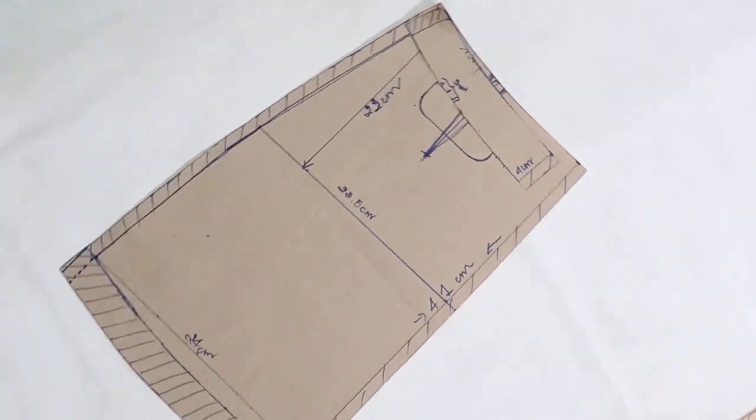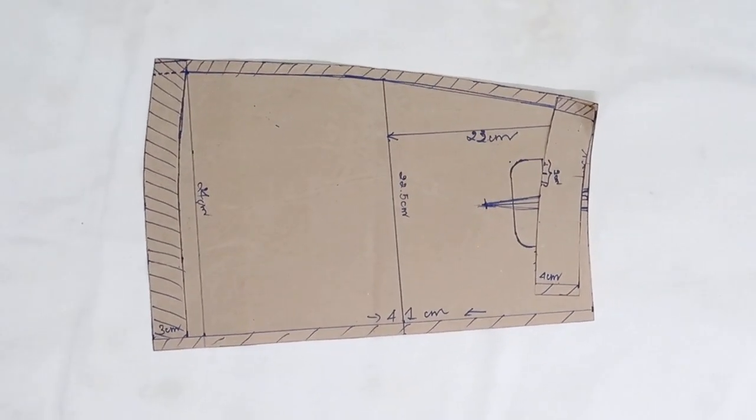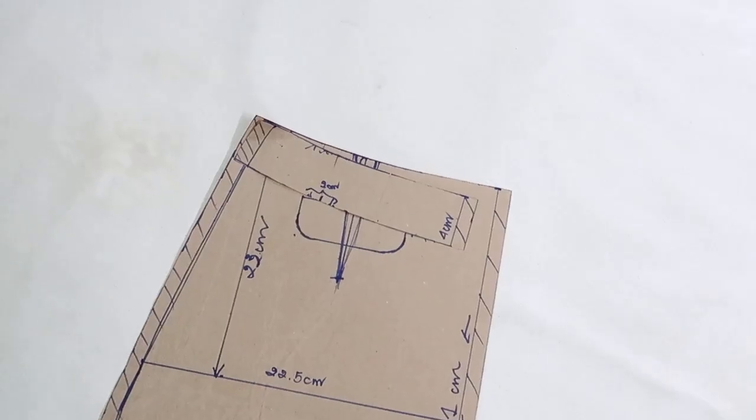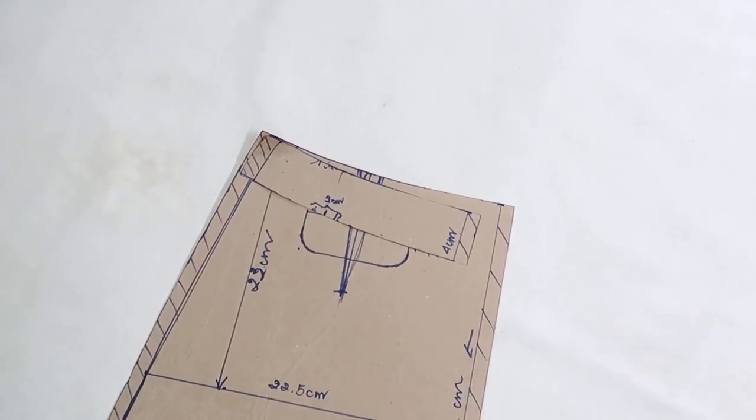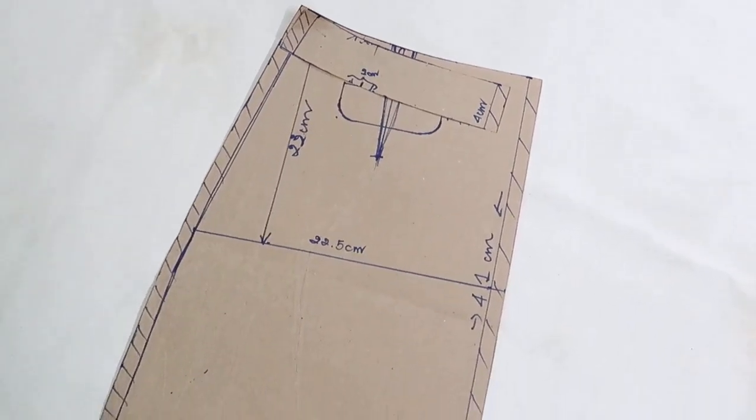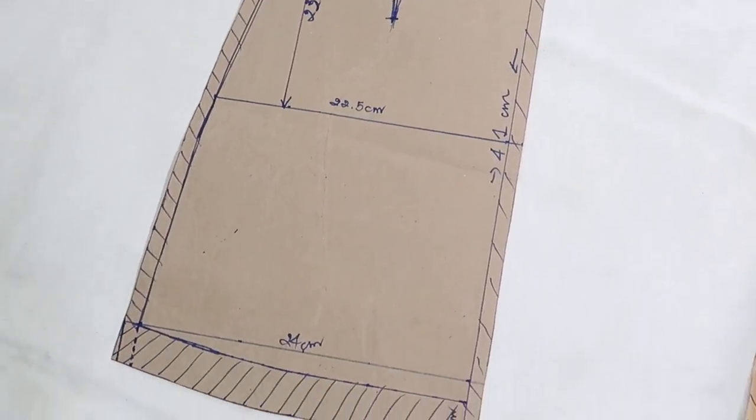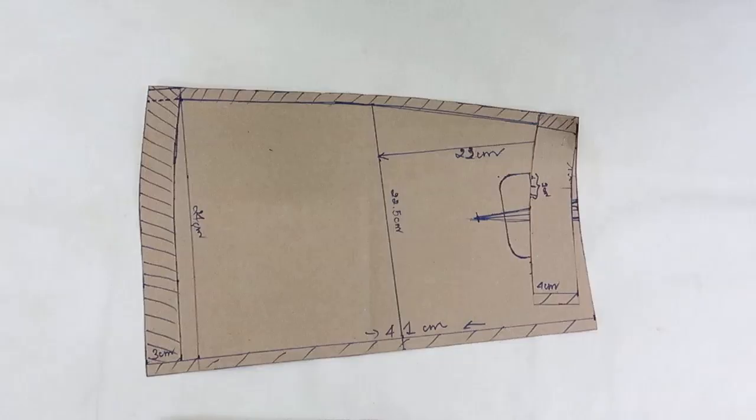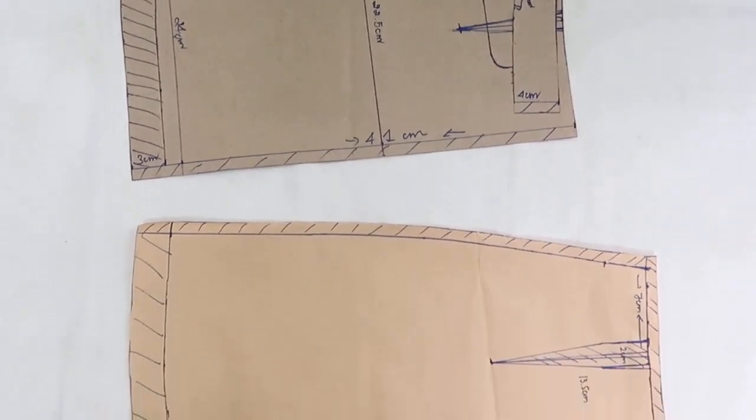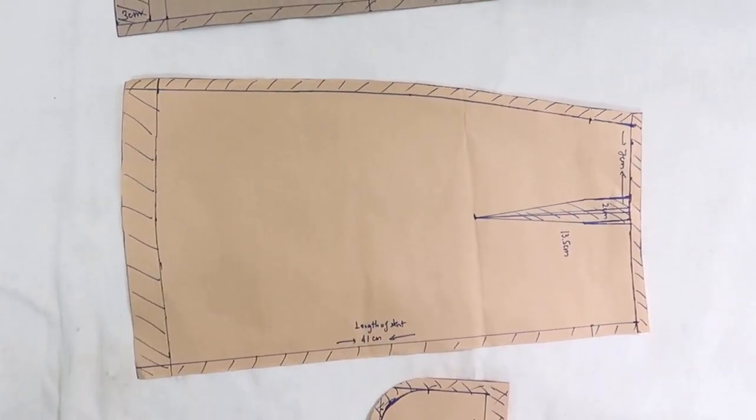For the pattern, I'm going to use the last pattern again because they are absolutely similar to each other, just different in the waistband. This time, I'm not separating the skirt and the waistband. Then, I'm going to create a new pattern, adding the waistband like this.